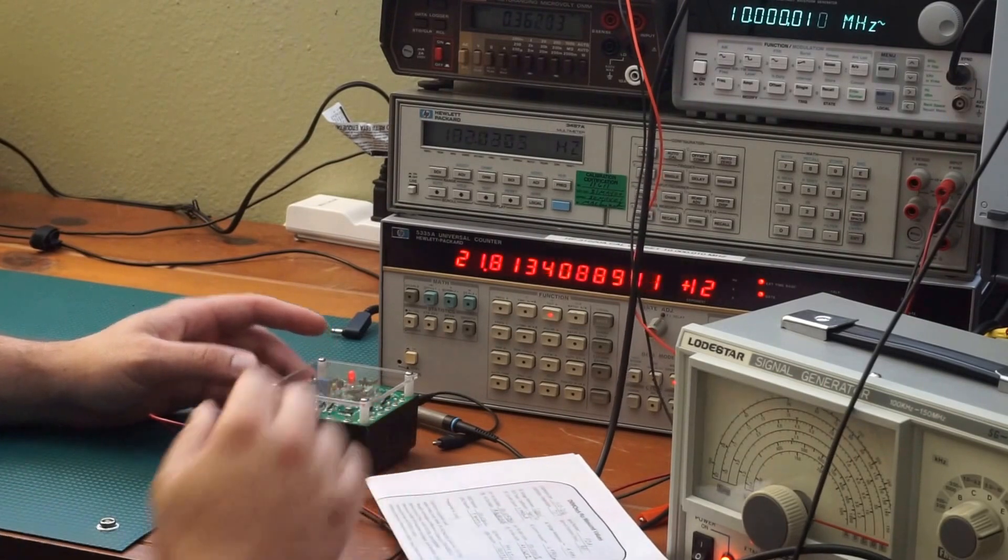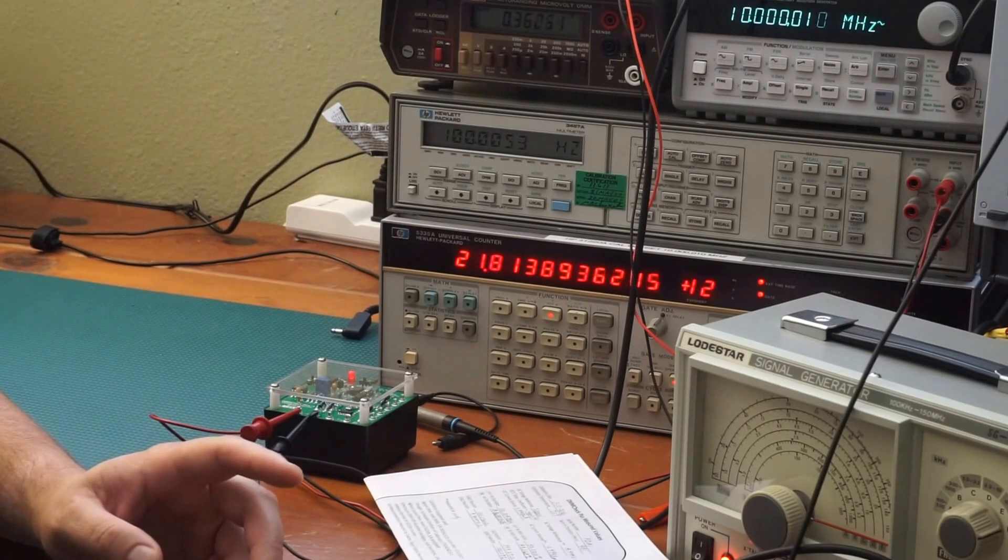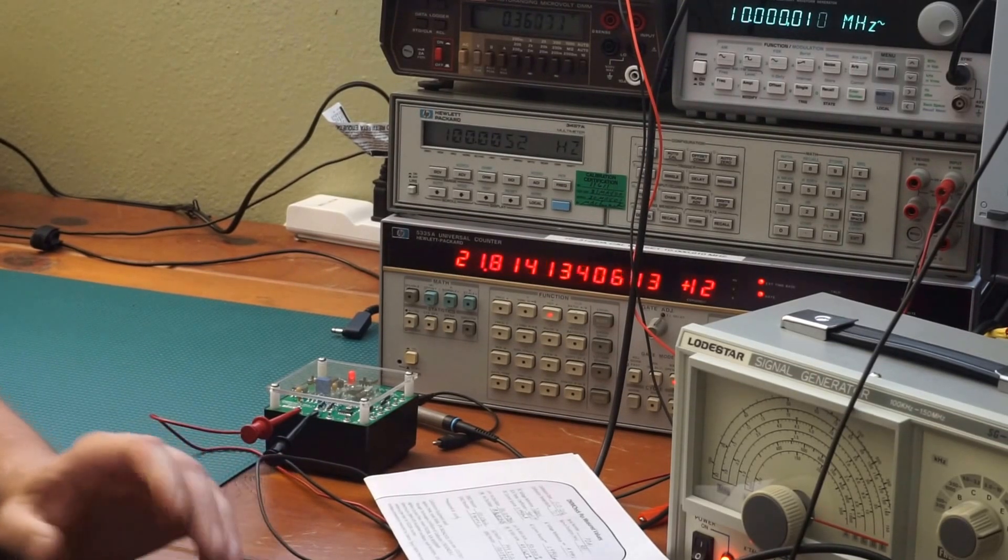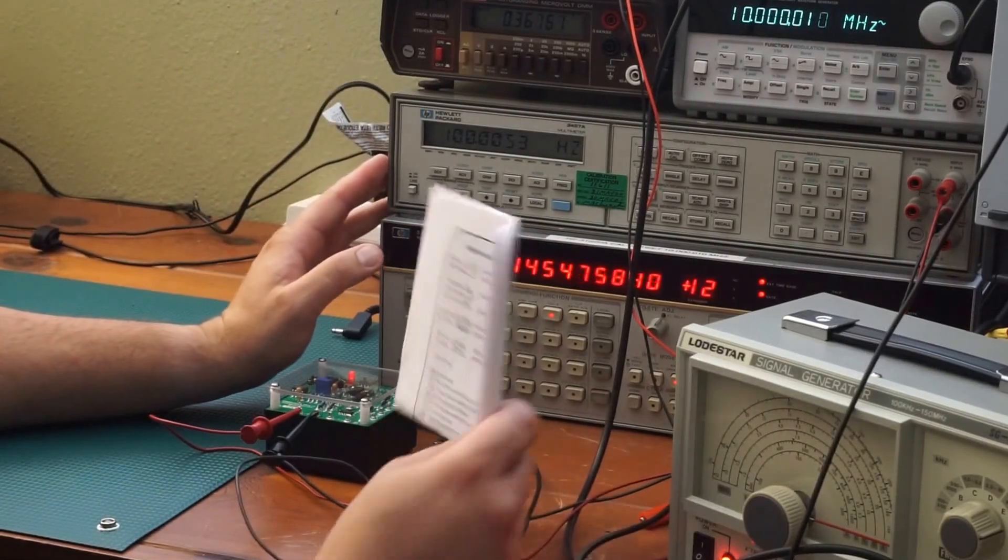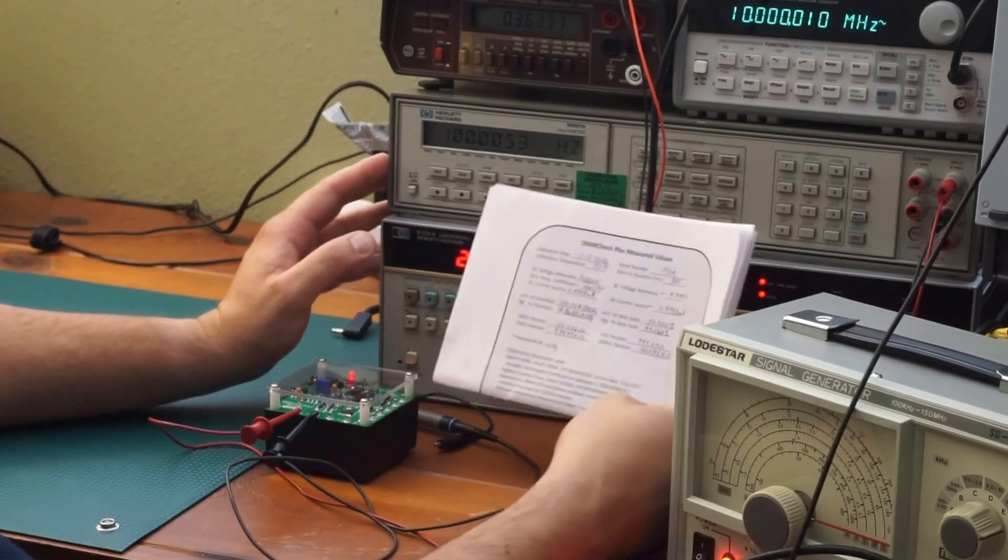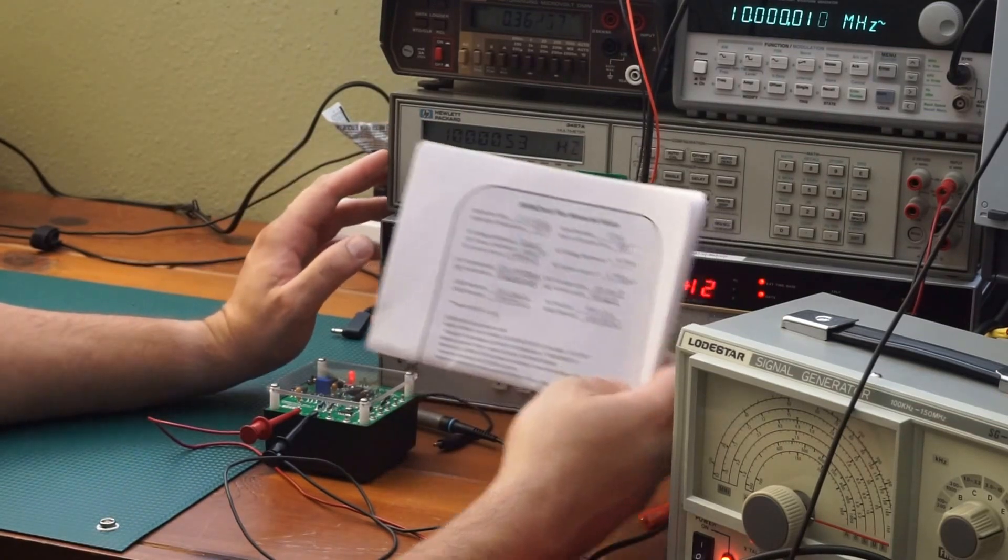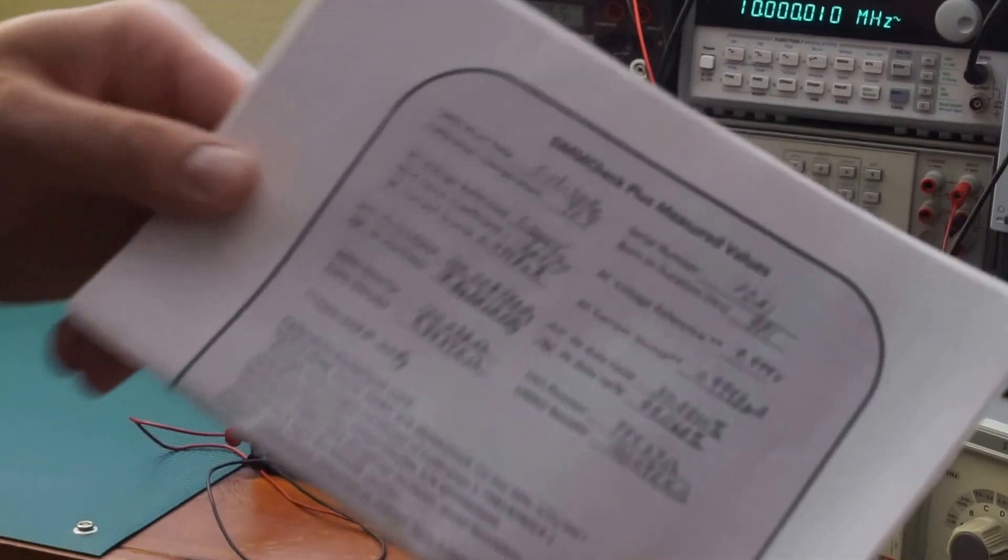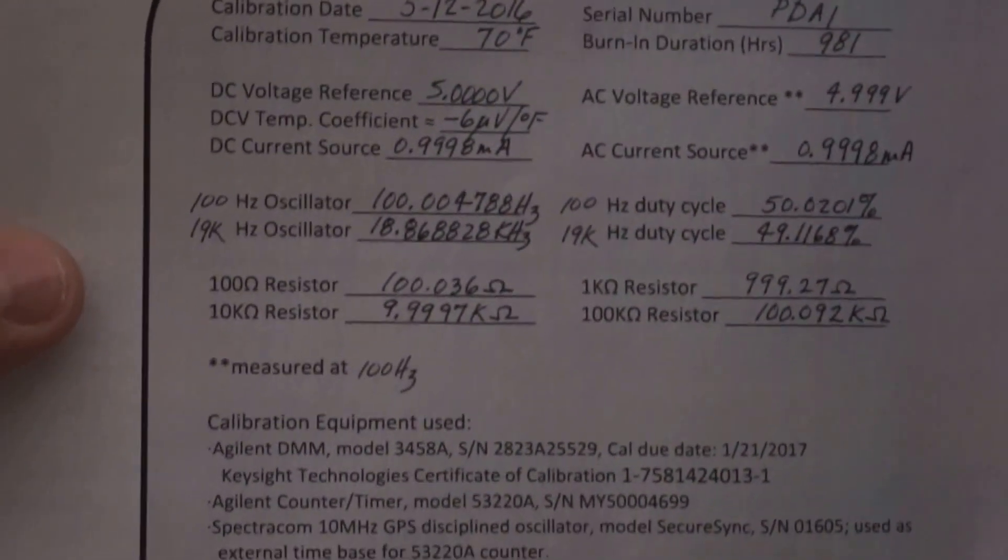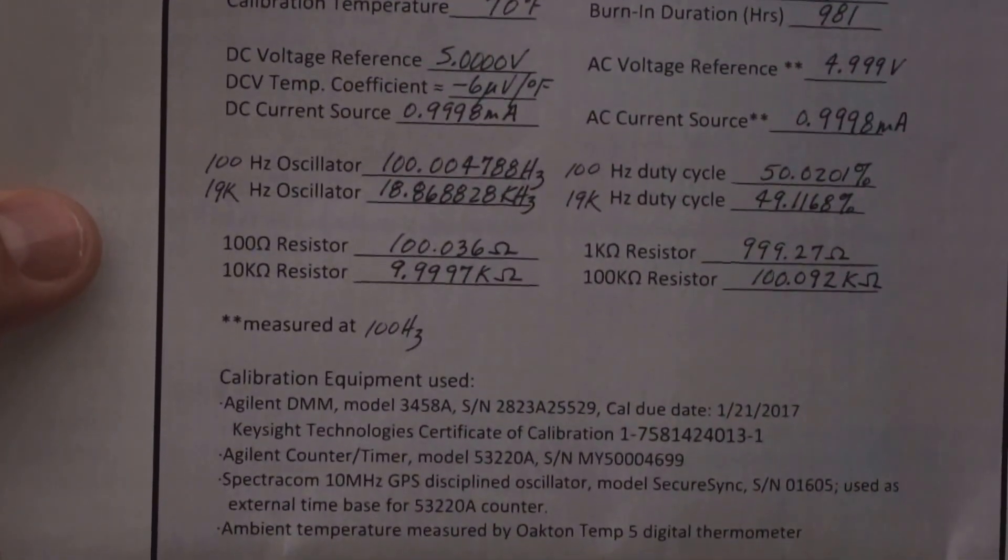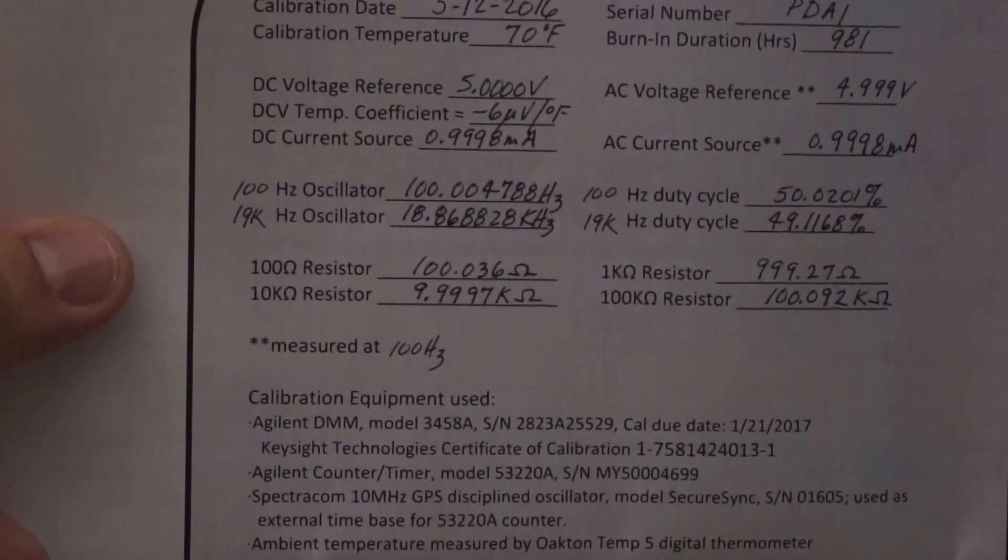So I purchased the DMM check plus model that offers two different frequency ranges and I think it's a $10 extra feature. I chose 100 Hertz and 19 kilohertz. Right now we're at the 100 at the 100 Hertz range and my multimeter is reading 100.0053 Hertz and let me show you what they send me here. They sent me. So as you can see it's 100.004788 Hertz so it's right there.